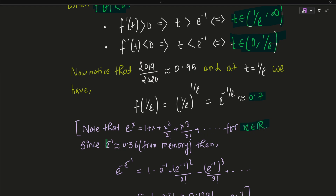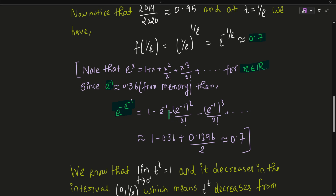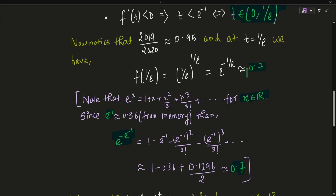Since e^(-1) ≈ 0.36 or 0.37 — a value also encountered in physics with capacitors — we need e^(-e^(-1)). Substituting x = -e^(-1) into the Taylor series gives a series starting with 1, minus 0.36, plus (0.36)^2/2 ≈ 0.1296/2, and so on. Approximating just the first three terms yields approximately 0.7.